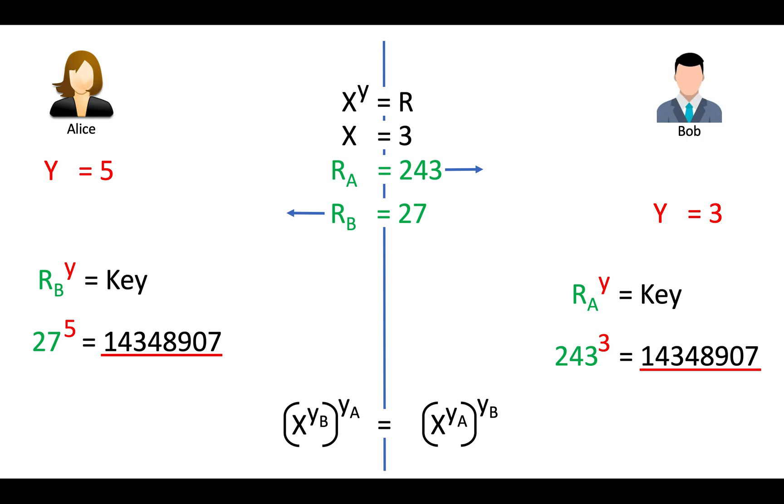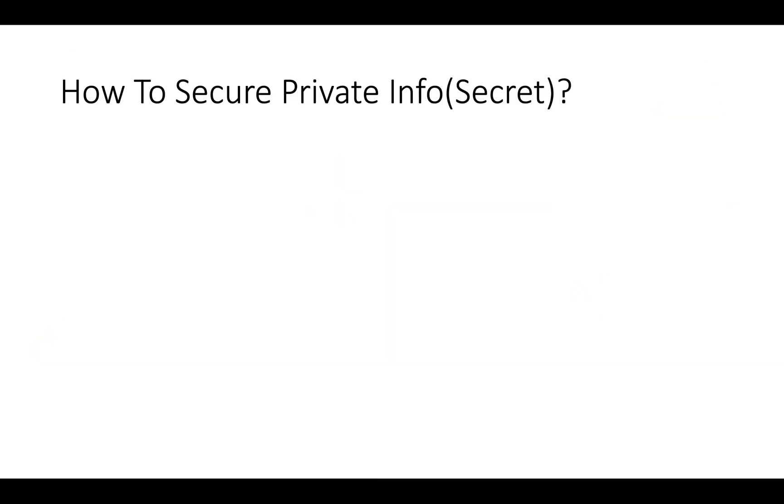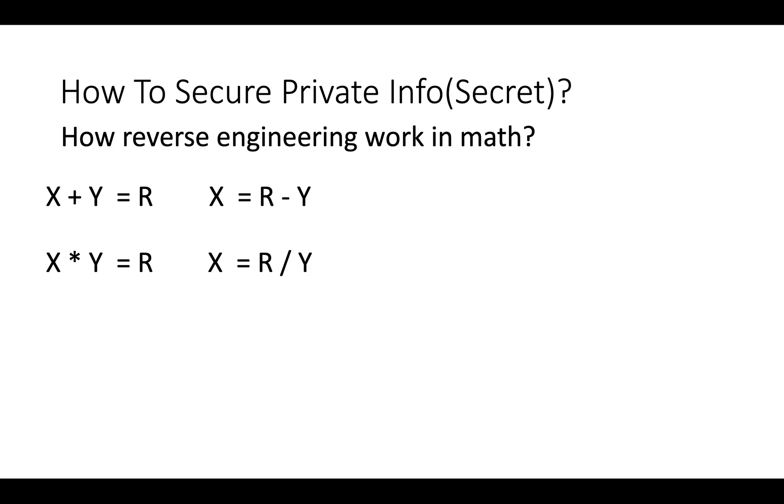Now you must have question here, that if we expose value of x and value of r, then it will be easy for anyone to calculate value of y. How to secure private info or secret? Let's understand how reverse engineering works in math. Let's say I have formula x plus y equal to r. From value of y and r, I want to derive value of x. I can use x equal to r minus y, means plus has reverse operator minus. Same way multiplication has reverse operator division.